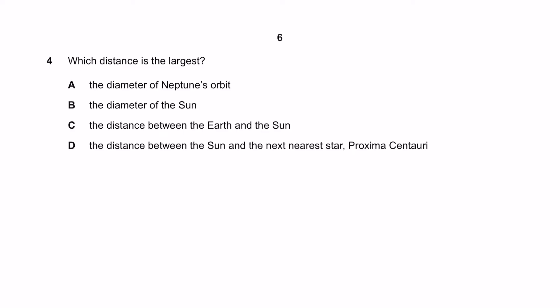Question 4. Which distance is the largest? The diameter of Neptune's orbit, the diameter of the Sun, the distance between the Earth and the Sun, or the distance between the Sun and the next nearest star which is Proxima Centauri? The answer here is D because the next nearest star is a few light years away from our solar system.